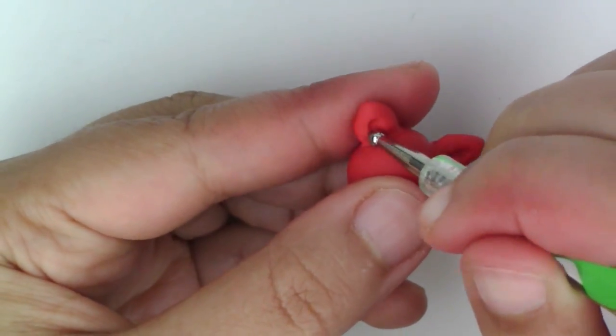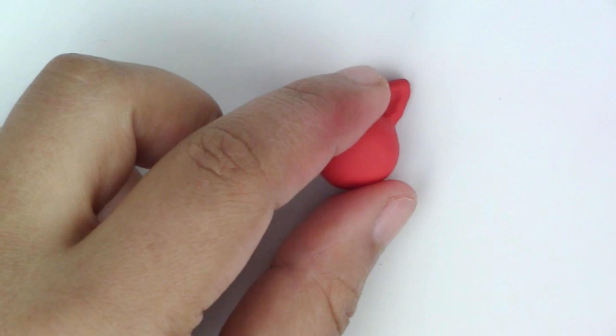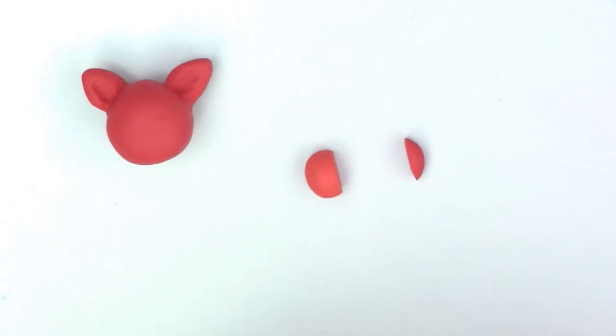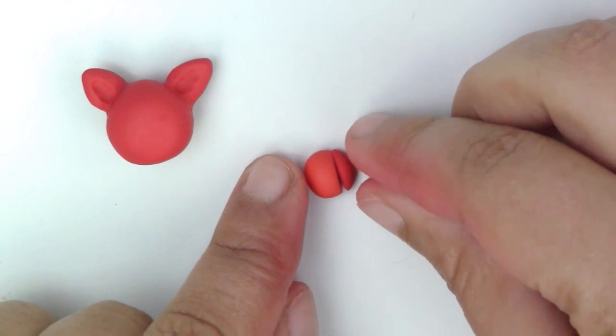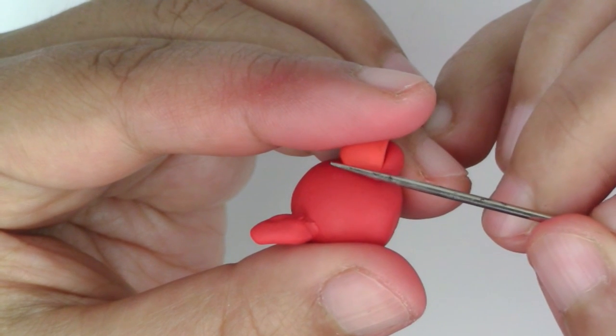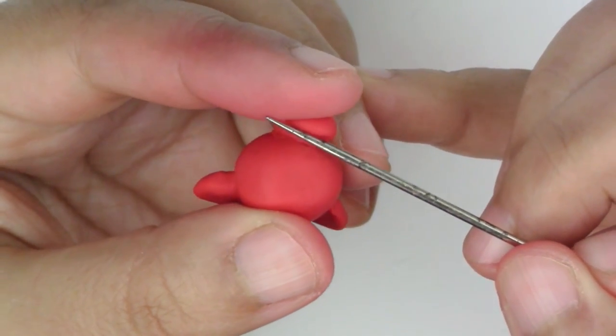Make little dents inside the ears. For the muzzle, roll one ball of red, and another of lighter red with the same size. Cut off the bottom, and add them together. Put them on the face, and smooth it in.